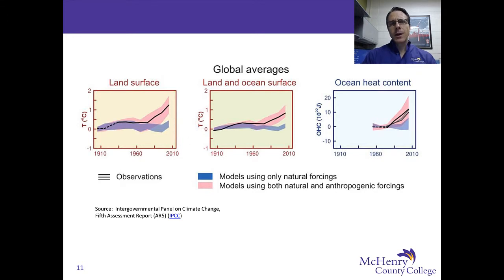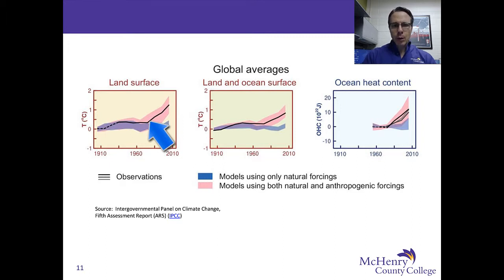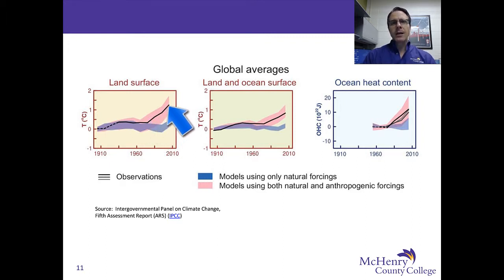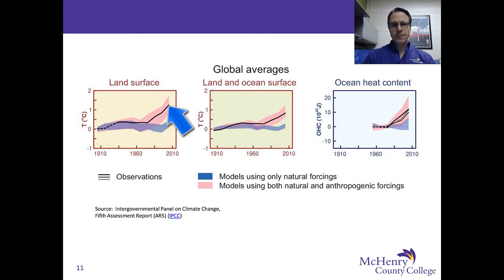Once we see that information, we can check the computer models to see if they are correct or incorrect. We then lay the observation line — the black line — over the blue as well as the pink areas, and the black observed line only matches the pink area. This means the computer model has accurately predicted that the observed temperature change is due not just to natural forcings, but due to natural and anthropogenic forcings — natural and human-induced heating that we observe.